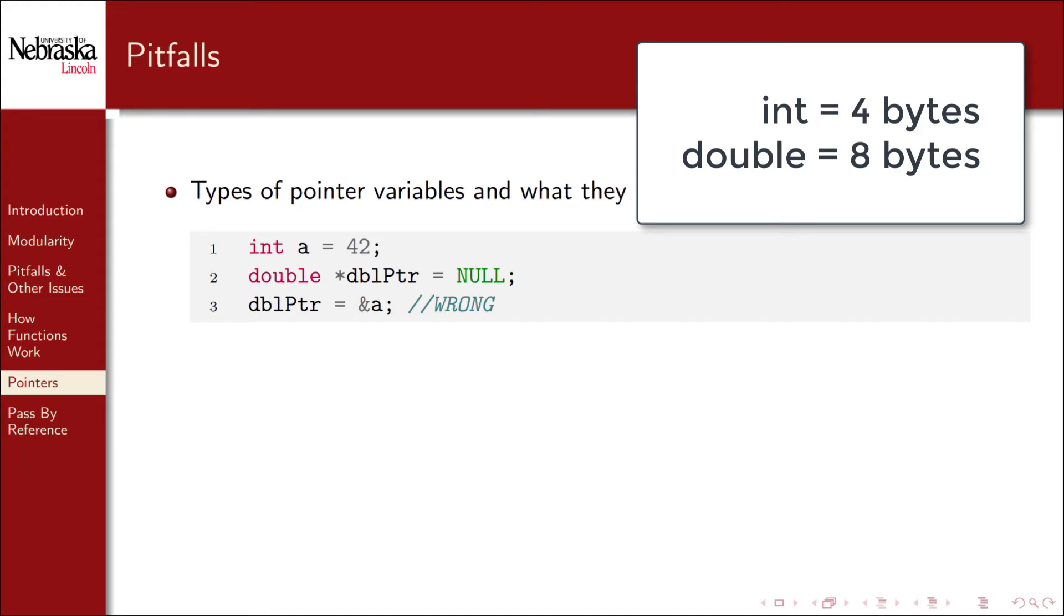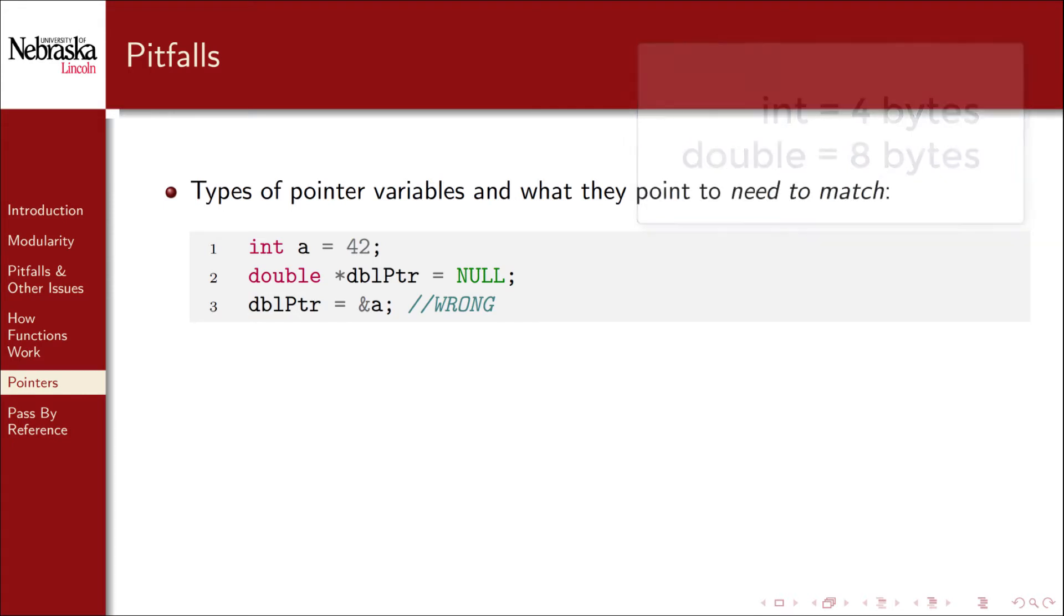Since we make it point to a memory location that only holds a four byte integer, it will extend past the integer and try to treat it as a double which is likely going to give us some garbage value.